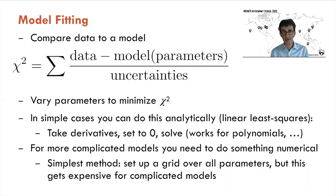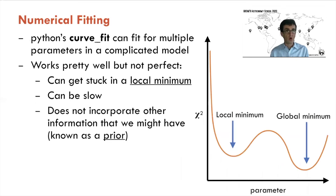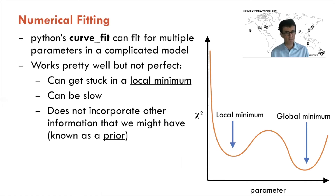What we usually do instead is numerical fitting. Python's curve_fit routine can fit multiple parameters in a complicated model and works pretty well, but it's not perfect. It can be slow and it'll get stuck in a local minimum. The chi-squared fitting routine might stop at a local minimum, not realizing that moving a little further would find a better minimum where chi-squared is even lower and we have a better absolute fit.